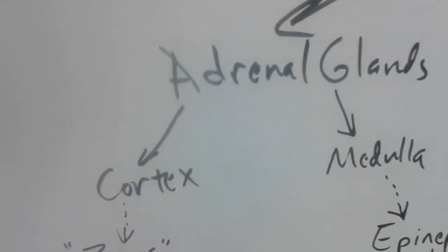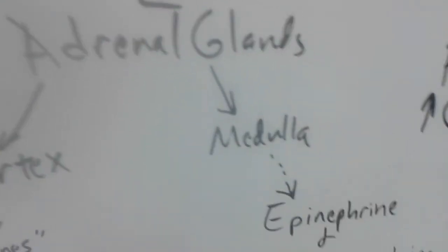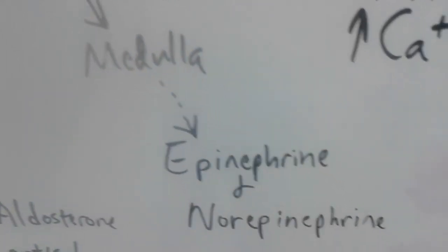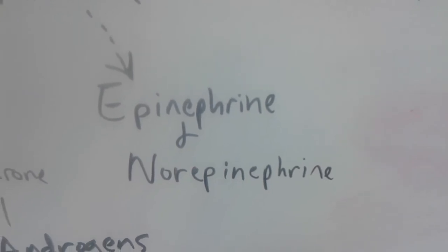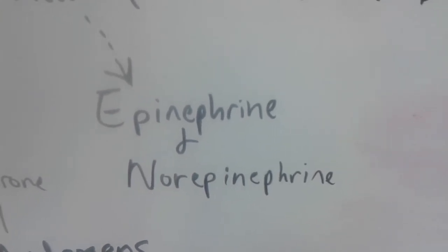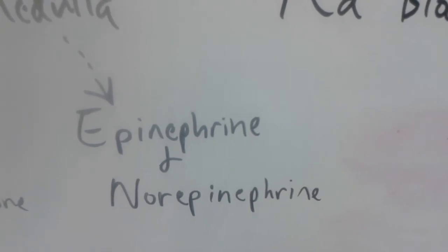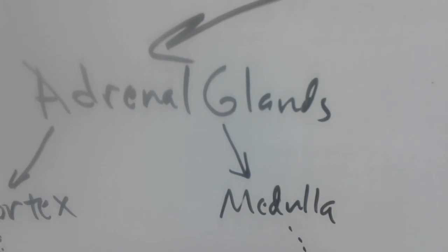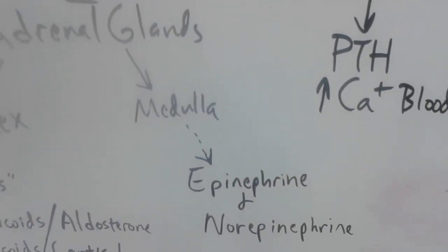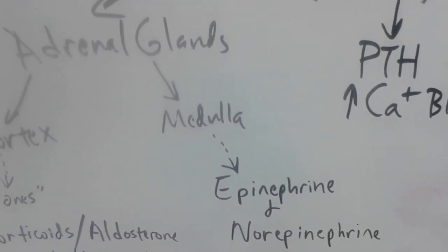The cortex is the outer layer, the medulla is the inner layer. The medulla only makes two things, epinephrine and norepinephrine. And if you don't know what that is, that is the happy little potent cocktail that creates what we call adrenaline. So we can stimulate the medulla in the adrenal glands and it will then in turn make epinephrine and norepinephrine for us.